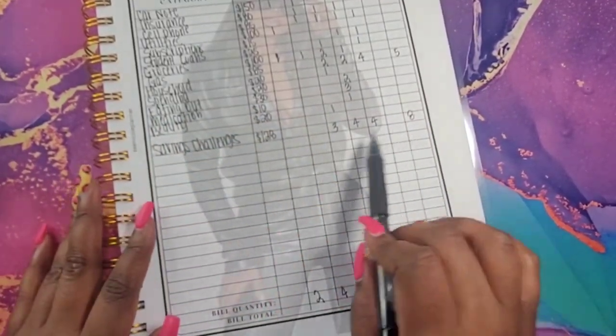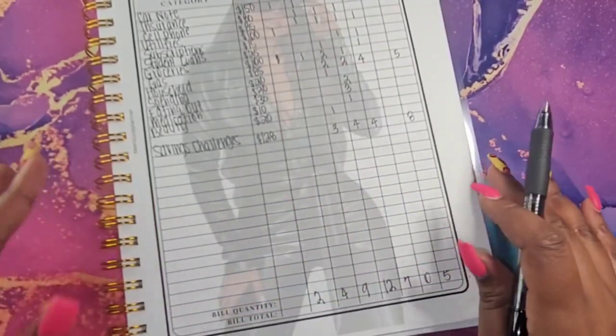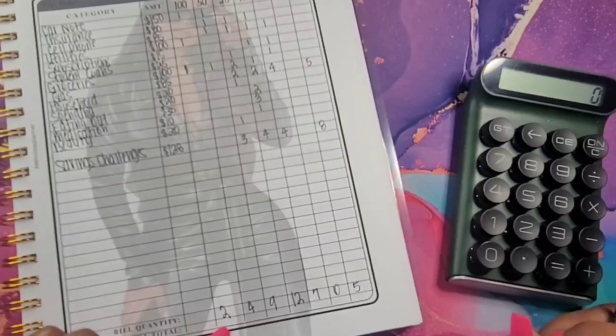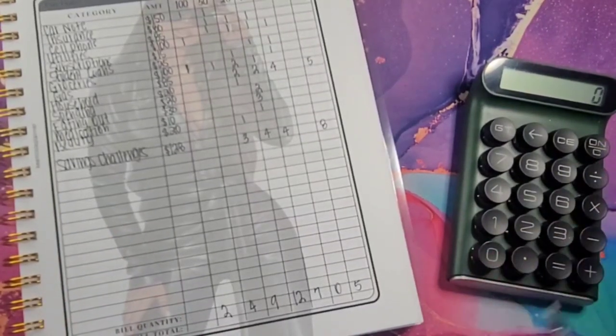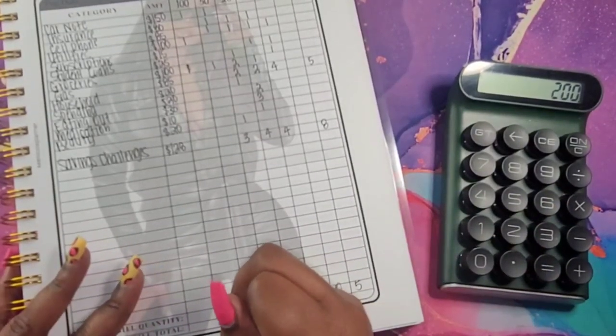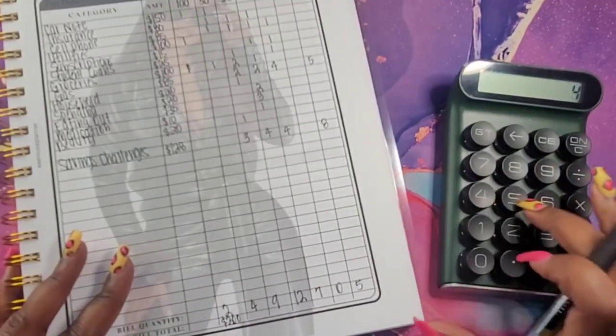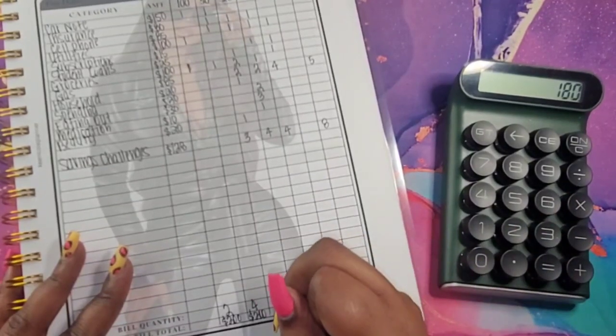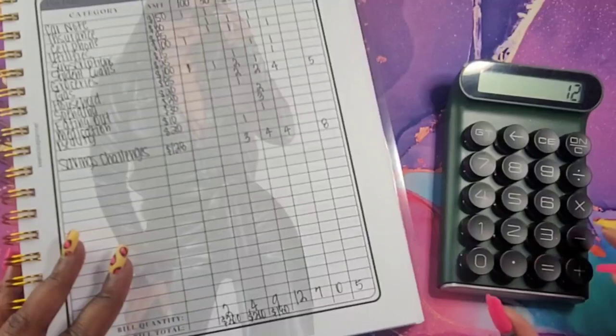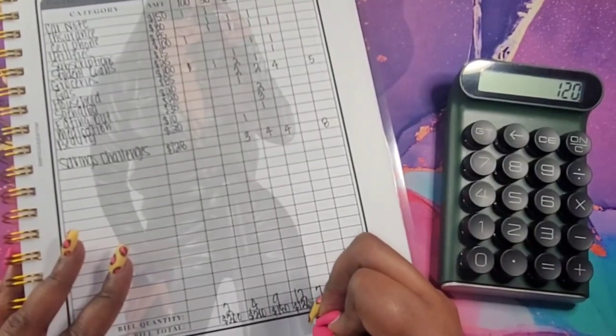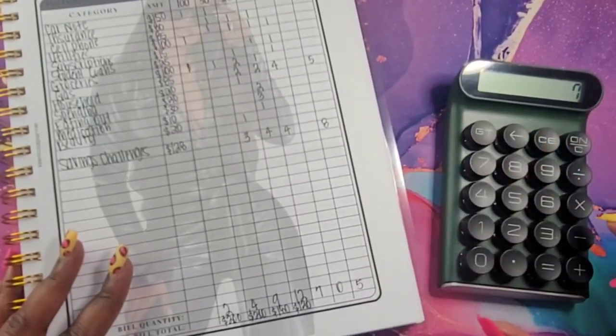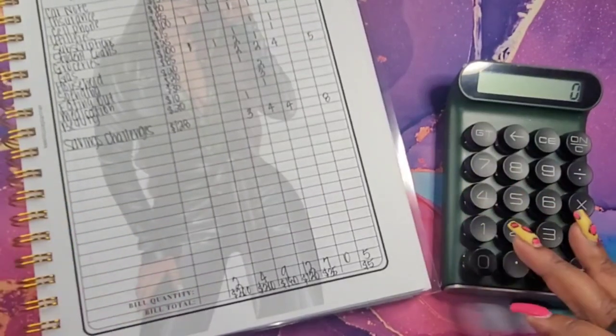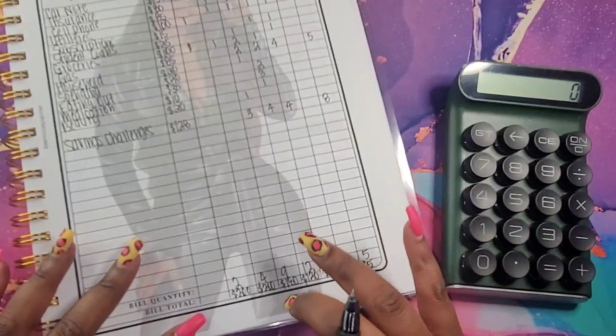And as I explained earlier, I'm not counting my savings challenges because basically they are already in the denominations and they will be coming out of a separate account. So what I will do is go and get the right amount. So 200. So 2 times 100 equals 200. 4 times 50 is 200. 9 times 20 is 180. 12 times 10 is 120. 7 times 5 is 35. And 5 times 1 is 5. So let's add that up to make sure we have the correct amount. And this will be a total of $740.